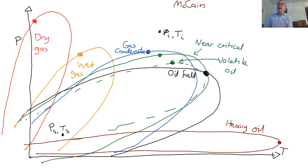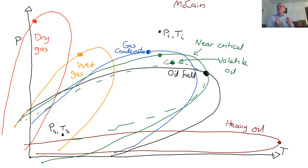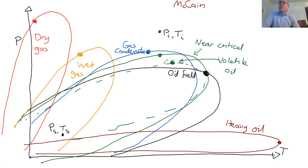You can also have a near-critical oil, where the initial conditions are very close to the critical point. It's not clearly an oil field or a gas field — it produces a lot of both liquid and gas. Technically you determine which side of the critical point you're on, but it behaves like a critical mixture and isn't obviously one field type or the other.